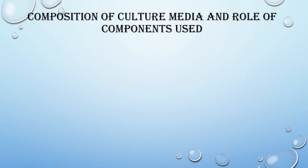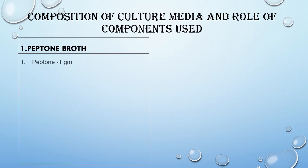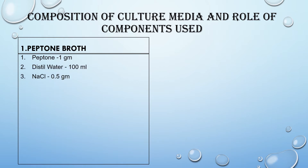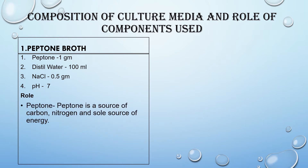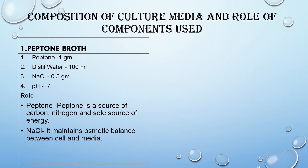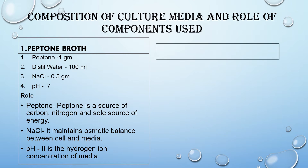The first one is peptone broth. The composition is: peptone 1 gram, distilled water 100 ml, NaCl 0.5 grams, pH 7 (neutral). Role of ingredients: peptone is a source of carbon, nitrogen, and sole source of energy for microorganisms; NaCl maintains osmotic balance between cell and media; and pH is the hydrogen ion concentration of the media.